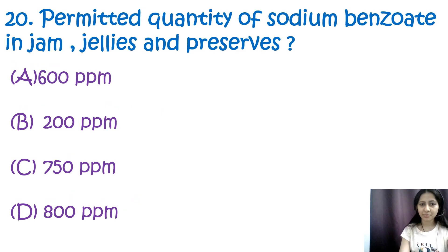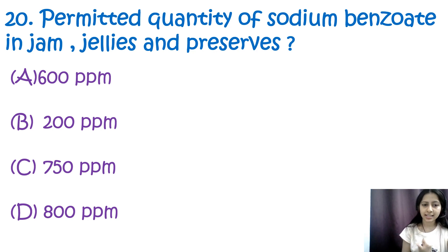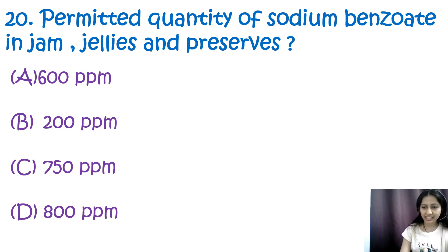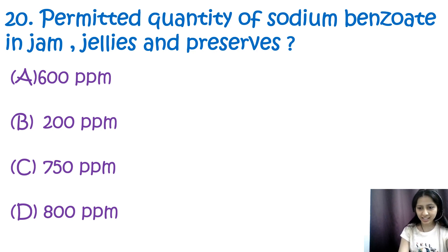Question 20: The permitted quantity of sodium benzoate in jams, jellies, and preserves is — options are 600 ppm, 200 ppm, 750 ppm, and 800 ppm. The correct answer is B, 200 ppm.